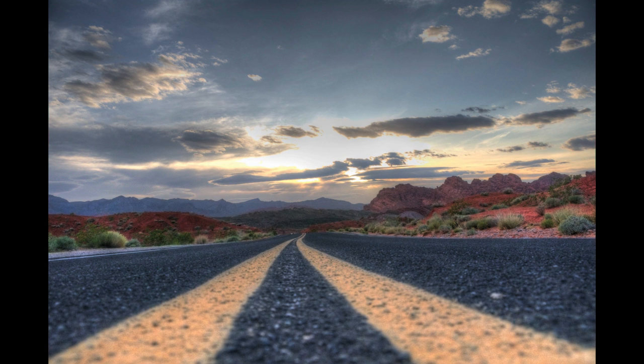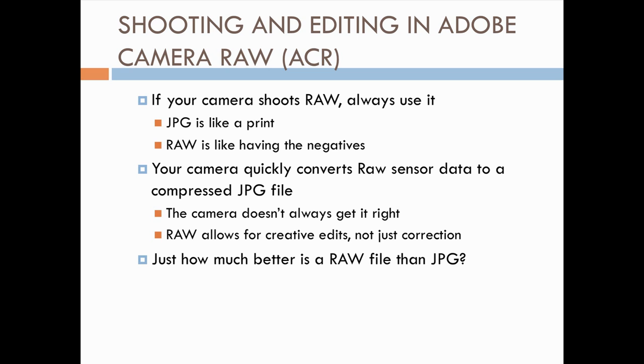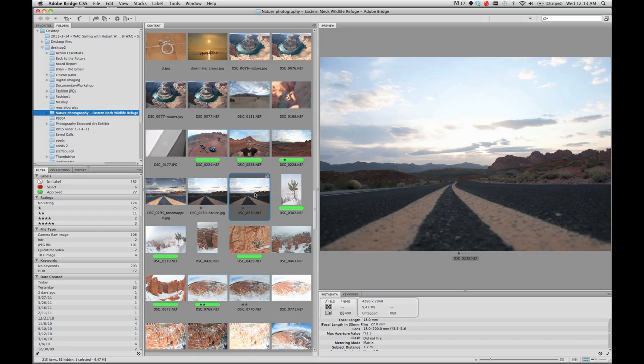Shooting raw is like having the digital negatives, while JPEG is like having just the print. With negatives you can go in the darkroom and make exposure adjustments. With JPEG you can do some things in Photoshop but there's no extra data — you can't recover blown-out areas or dark shadows. The camera doesn't always get it right when evaluating light, especially with really dark or really bright spots in the frame.